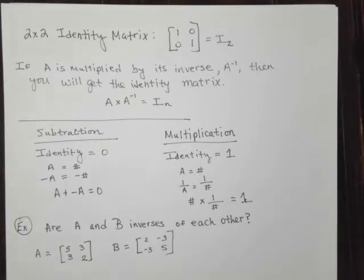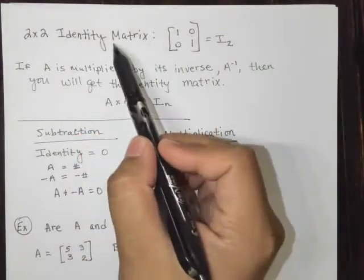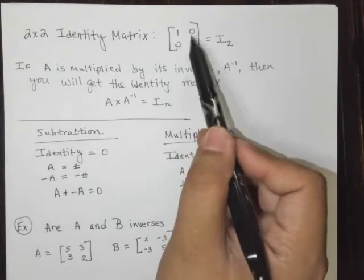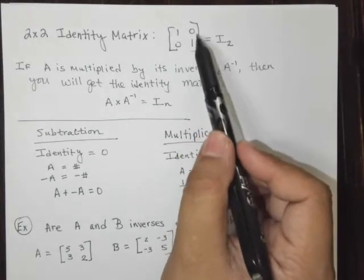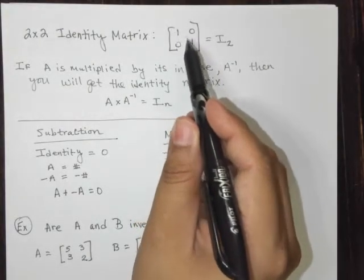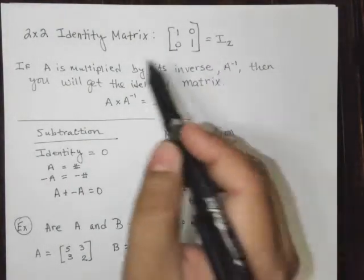And we're going to look at the first case of the 2 by 2 identity matrix. And the identity is this right here, it's 1, 0, 0, 1. So the identity for any n by n matrix is a matrix that's square, that has 1s along the diagonal.